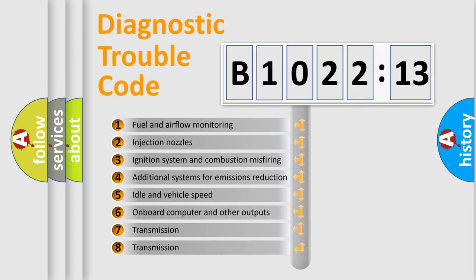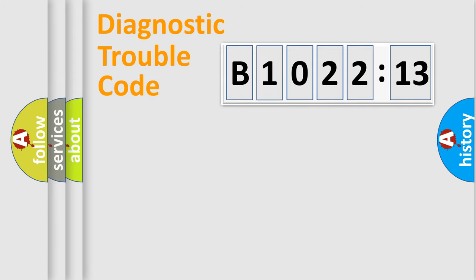The third character specifies a subset of errors. The distribution shown is valid only for the standardized DTC code. Only the last two characters define the specific fault of the group.